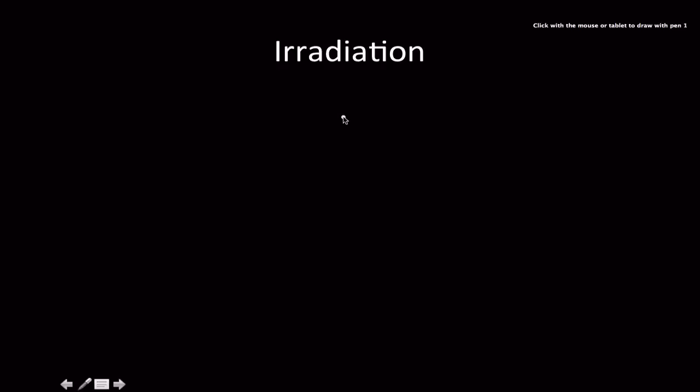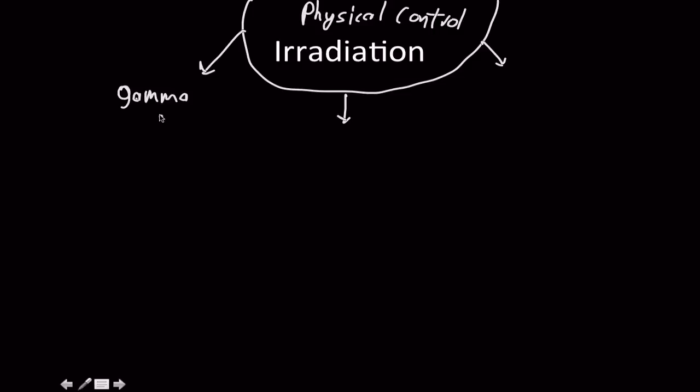Last thing that we're going to talk about is irradiation, in terms of, this is also a physical control. I should probably, I don't know why I didn't specify that. It's irradiation. So what are the three main ways that we can use, there's three main things that we can use to keep things in check. Well, there's, in no particular order, gamma rays, it's a little bit extreme, x-rays, and ultraviolet rays. So let's just talk about each and every one of these.